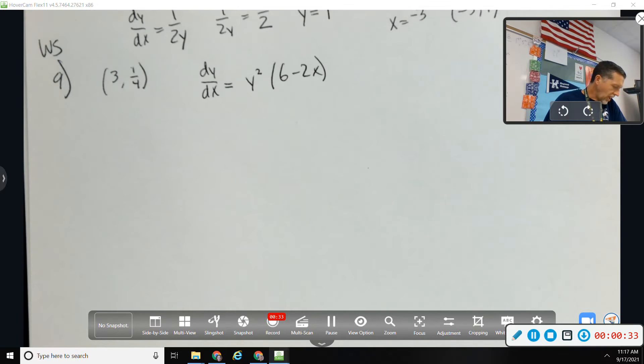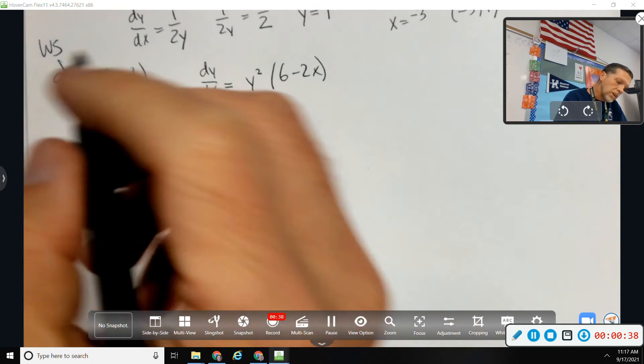which is dy dx equals y squared times 6 minus 2x. Find the second derivative and evaluate it at the point 3, 1 fourth.